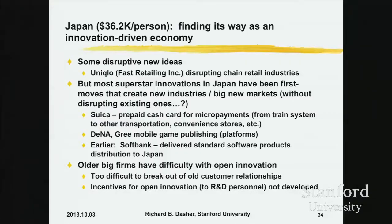Moving on to Japan, I think Japan is finding its way as an innovation-driven economy. There are some disruptive new ideas — Uniqlo really changed the whole department store scene in Japan. The big department stores are still there, but they have to do business differently, thanks to the discount business model that Uniqlo brought in. Throughout the history of Japan, the really giant famous new companies that appear — whether it's DeNA and Gree, SoftBank before that, or way back before that, Panasonic and Honda Motors — are all companies that were first movers in creating new industries and giant new markets.